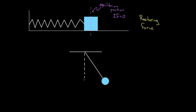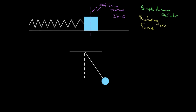There are lots of oscillators, but only some are really special, and we give those a special name: simple harmonic oscillators. You might think that's a pretty strange name since it doesn't sound very simple. What makes simple harmonic oscillators special is that even though all oscillators have a restoring force, simple harmonic oscillators have a restoring force that's proportional to the amount of displacement.